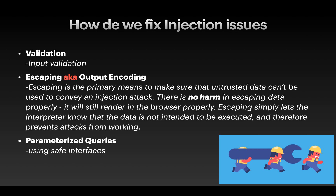How do we fix injection issues? First is input validation, which is very important. Second is escaping, also called output encoding. Escaping is the primary means to ensure that untrusted data sent to any interpreter does not convey an injection attack. It tells the interpreter that the data is not intended to be executed — it can be reflected but not executed — thereby preventing attacks. The last fix is parameterized queries, which also help in fixing injection issues.